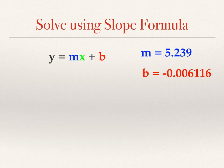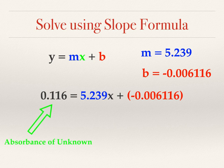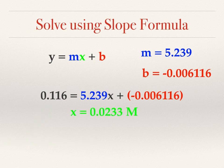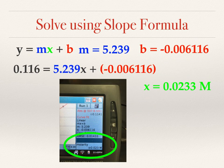Going back to our slope formula and plugging in our information: our slope is 5.239, we have our y-intercept, and our absorbance of 0.116. Rearranging the equation and solving for x, we get 0.0233 molar. Comparing that to what we got from the interpolation, they're spot on — pretty cool! So that's how you approach Beer's Law, how you can interpolate your graph, and how you can use the slope formula to determine the concentration of your unknown. Thanks for watching, everybody.